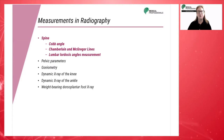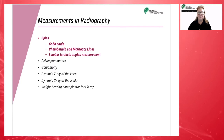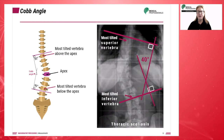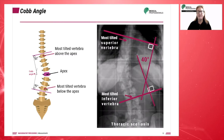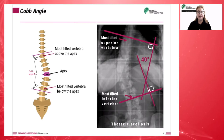We will first explore what measurements are made on spinal radiographs. The Cobb angle is the most common measurement technique used to quantify the degree of spinal deformity, particularly in the case of scoliosis.